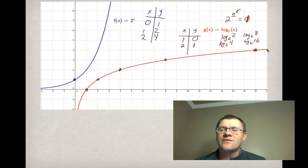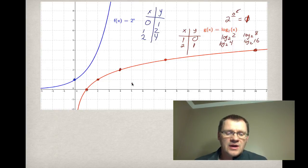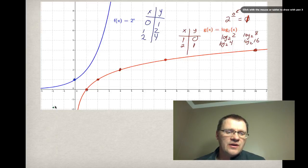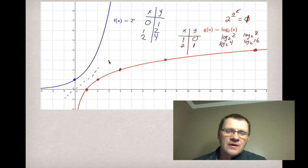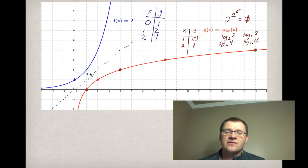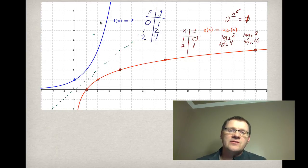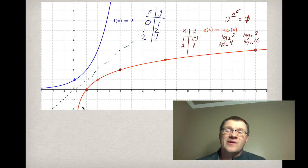Notice that these two functions are inverses of each other. Remember there's supposed to be an imaginary line at y equals x, and you can see that these two functions are a reflection in that imaginary line, which essentially makes them inverses of each other. So if you know how to find the exponential function from last unit, you should be able to find what the logarithmic function looks like.